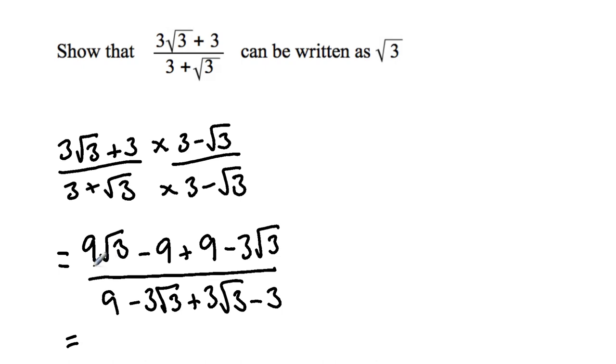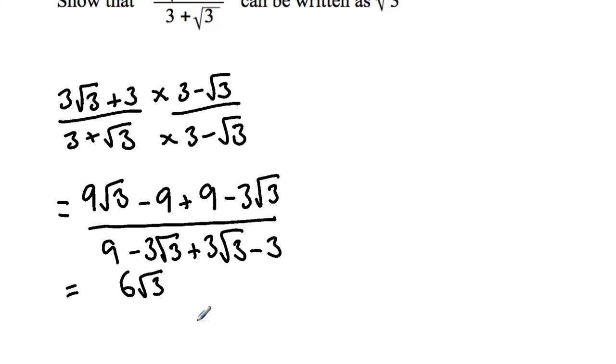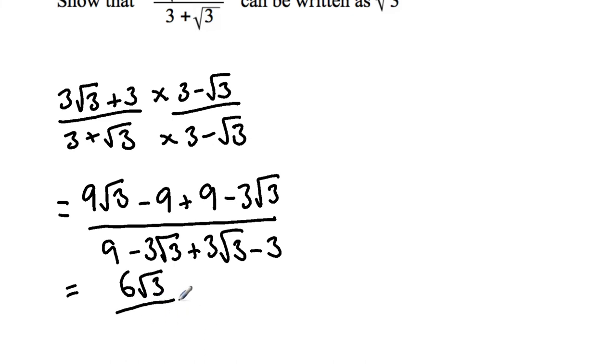So 9√3 minus 3√3 is 6√3, and minus 9 plus 9 gives us 0, which cancels out. In the denominator, we have 9 minus 3 which is 6, and negative 3√3 plus 3√3 gives us 0, which cancels out.